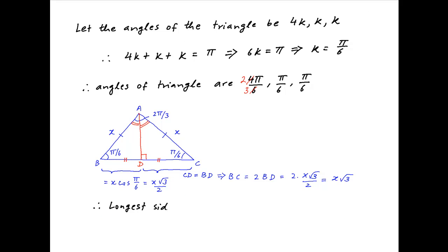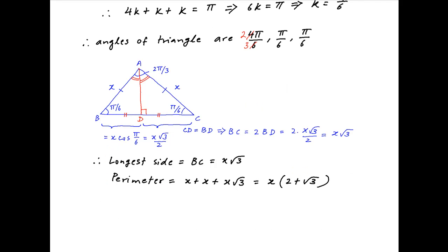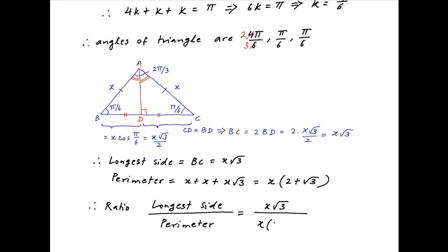Now, the longest side of triangle ABC is the one opposite to the largest angle, which is A. Therefore, the longest side is BC, which is x√3. The perimeter of triangle ABC is equal to x plus x plus x√3, which equals x times (2 plus √3). Therefore, the ratio of the longest side to the perimeter is x√3 divided by x(2 plus √3). The x cancels, and so the required ratio is √3 upon (2 plus √3).